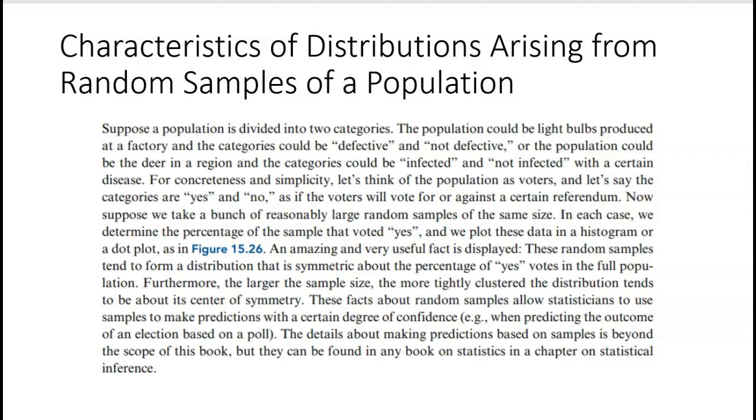An amazing and very useful fact is this: the random samples tend to form a distribution that is symmetric about the percentage of yes votes in the full population. Furthermore, the larger the sample size, the more tightly clustered the data distribution tends to be around its center of symmetry. These facts about random samples allow statisticians to use samples to make predictions with a certain degree of confidence. The details about making predictions is something you study in a statistics class, but we're going to kind of just discuss it briefly here.